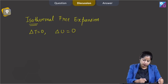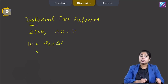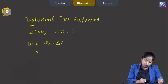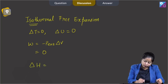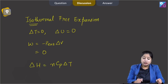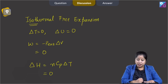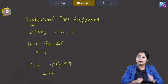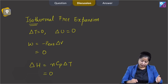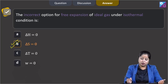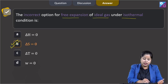Now for ΔH: ΔH = nCpΔT, and since ΔT = 0, ΔH = 0. The only thermodynamic property among the given options that is not equal to zero is entropy, because for expansion, entropy increases. Therefore, ΔS ≠ 0, and the correct answer is option B — ΔS is not equal to zero for free expansion of an ideal gas under isothermal conditions.